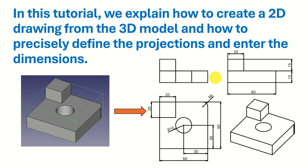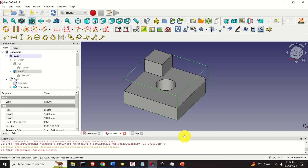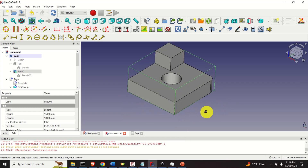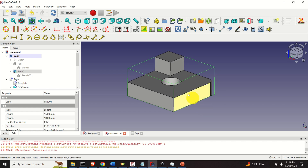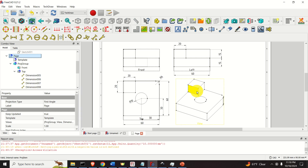The most important thing you need to learn is how to create a technical drawing such that some other person can properly read and understand it, and such that this other person or a team of people can manufacture your part. Here is the final outcome of this video tutorial: first you will learn how to create this 3D part, then from this 3D part we are going to create this technical drawing.